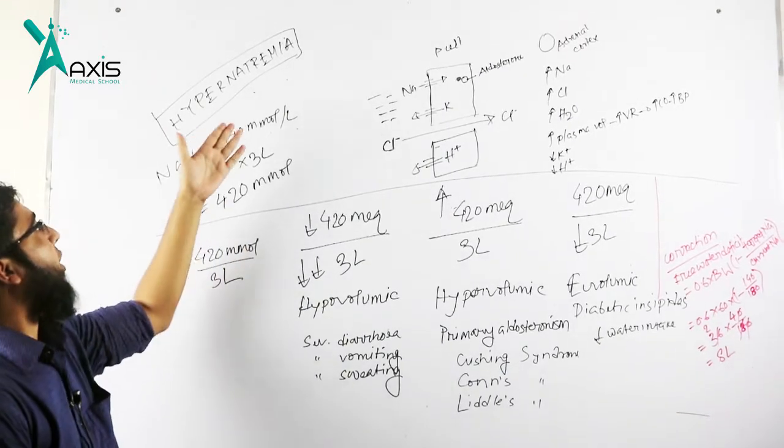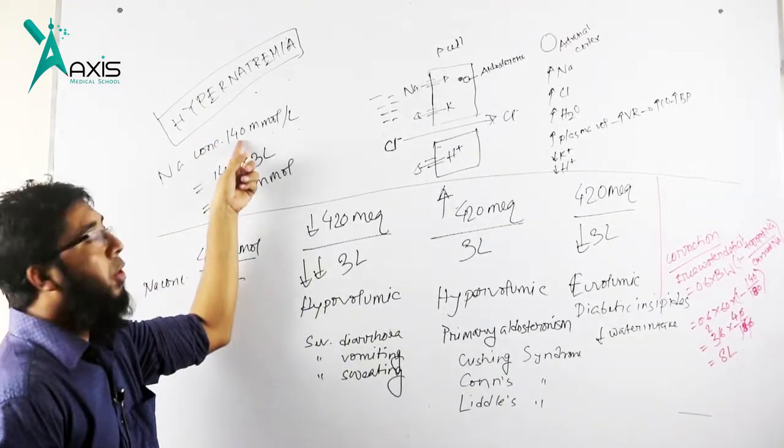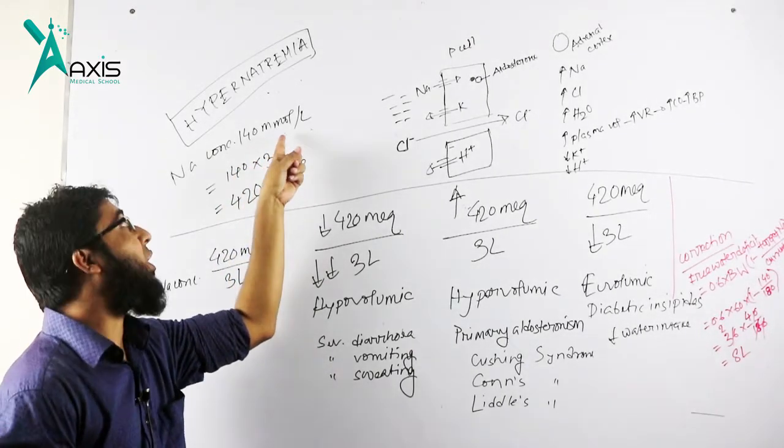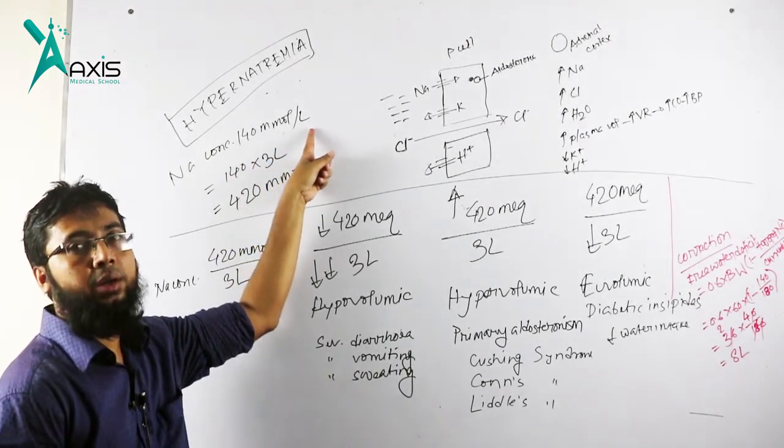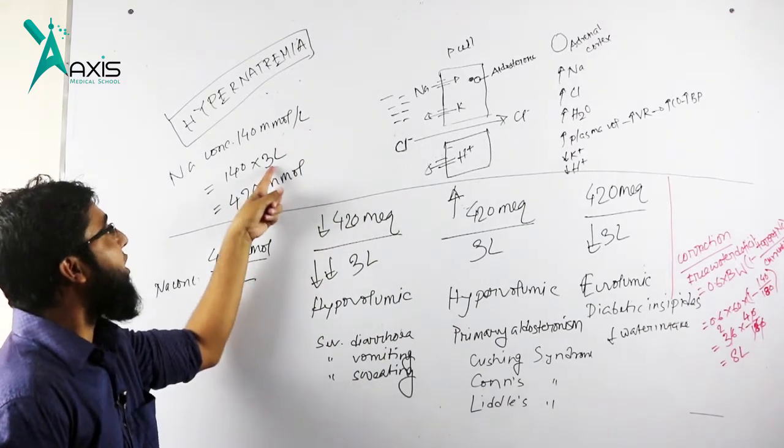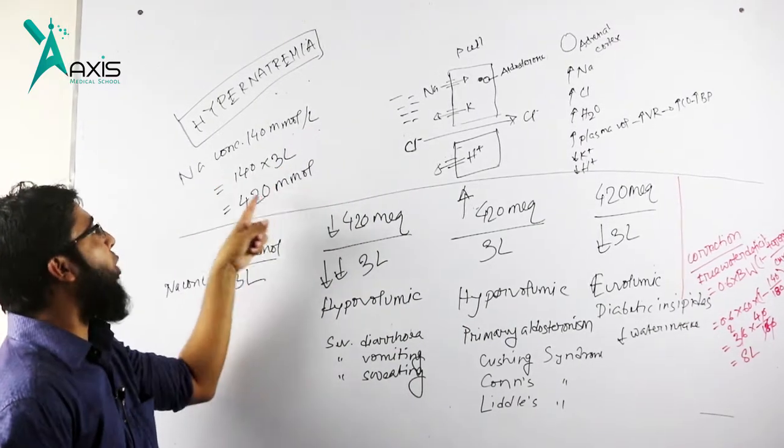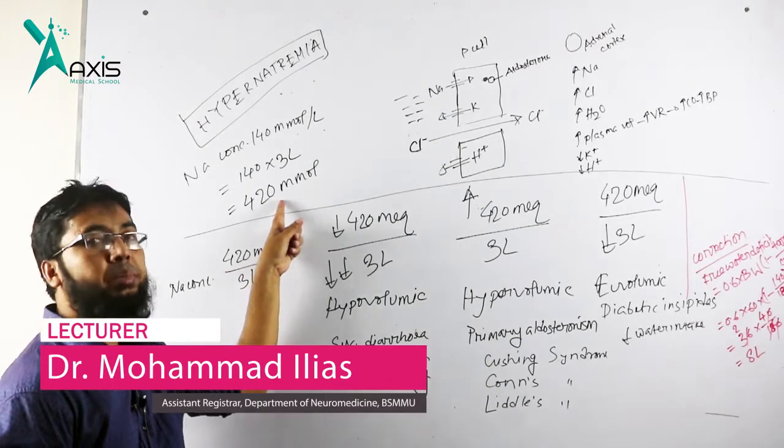We know that blood sodium concentration is 140 millimole or milliequivalent per liter. So in 3 liter plasma, the total amount of sodium is 420 millimole.